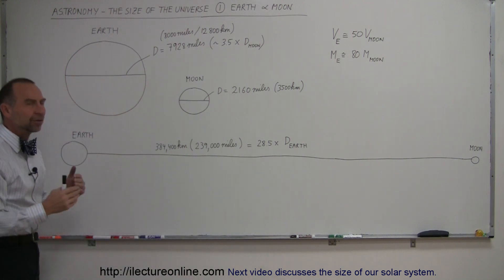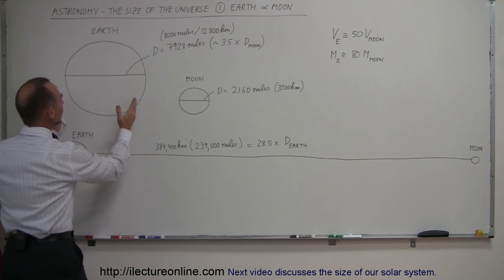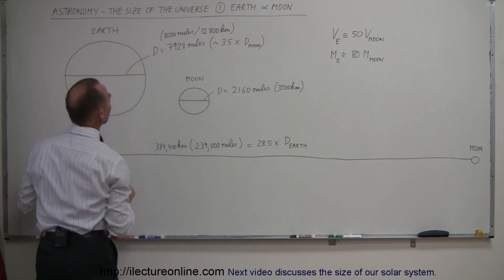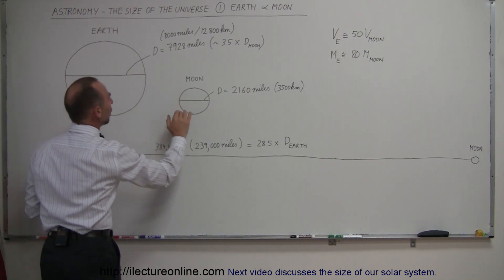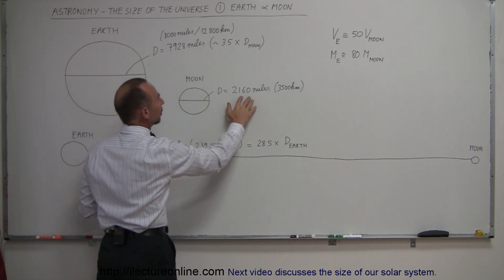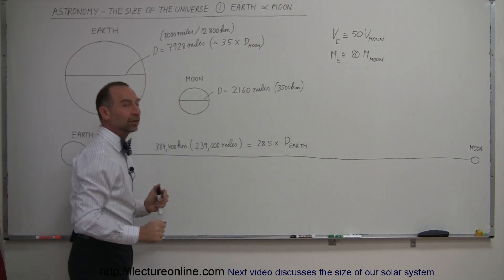Slightly more than that, but I like to use kind of round numbers. So about 3.5 times the diameter of the Moon. You can see that this is, again, about the relative size between the Earth and the Moon. The diameter of the Moon is a little bit over 2,000 miles and about 3,500 kilometers.